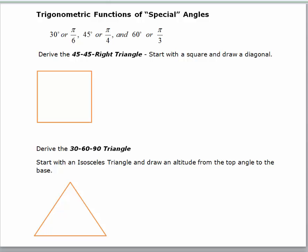Now let's look at some trigonometric functions of what we call special angles. Those special angles are 30 degrees, 45 degrees, 60 degrees, or their equivalent in radians. There are some trig functions that you're going to have to know by memory — those involving these special angles and multiples of them. The rest you are able to evaluate using your calculator.